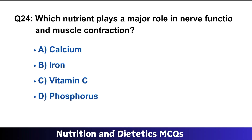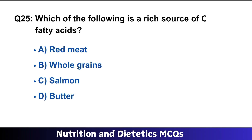Question number twenty-four: which nutrient plays a major role in nerve function and muscle contraction? A is the right option: calcium. Question number twenty-five: which of the following is a rich source of omega-3 fatty acids? C is the right option: salmon.